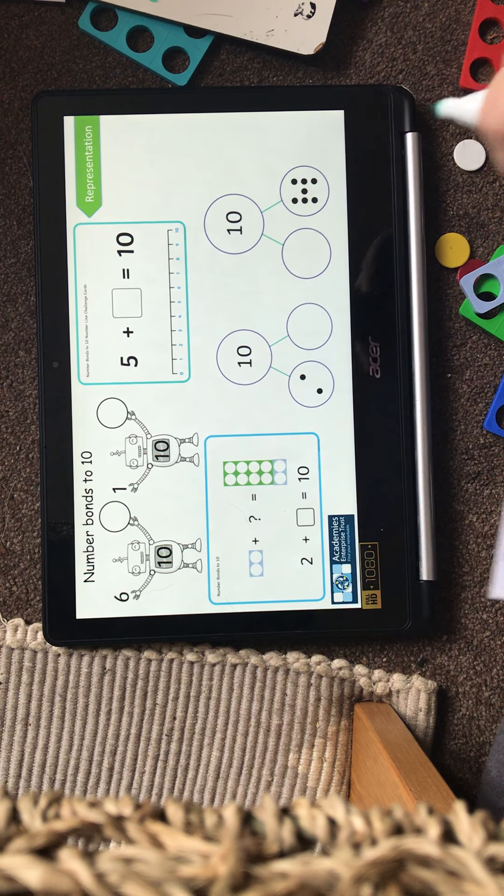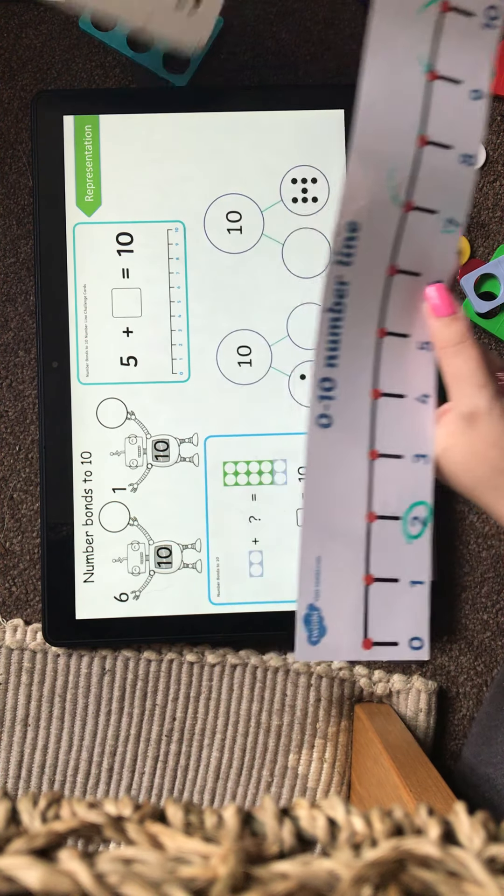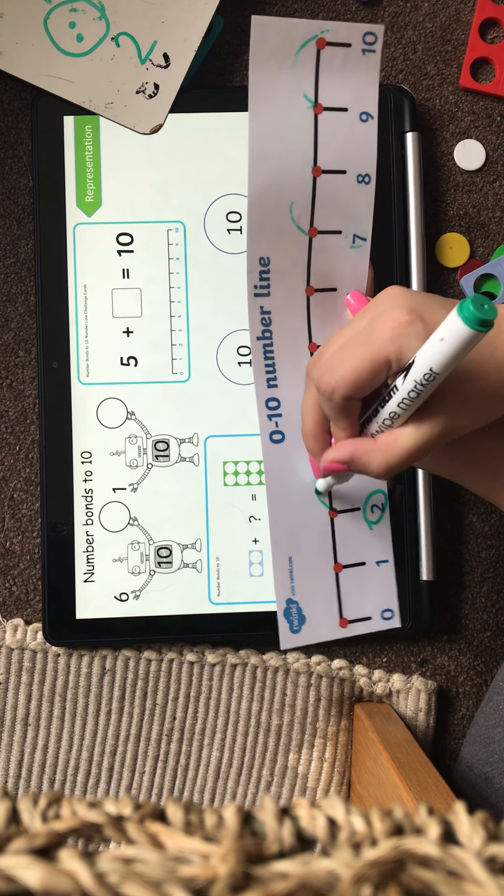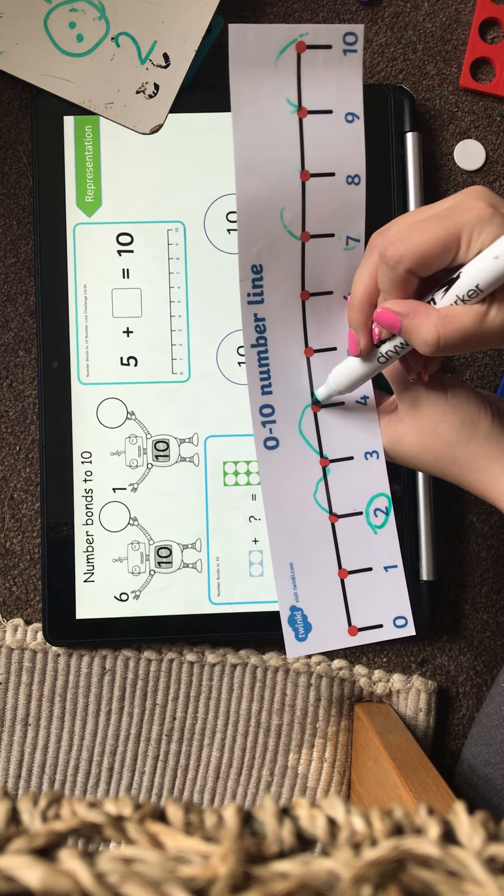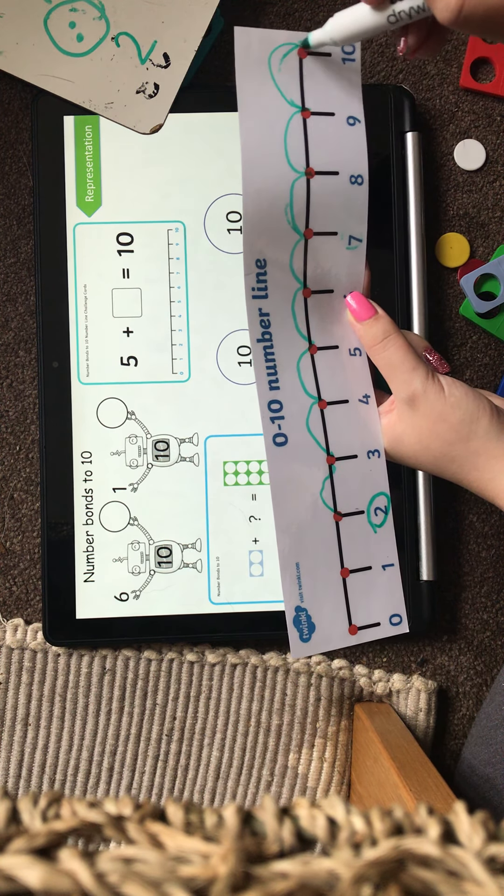So I'm going to find my 2. Oh, there it is. I'm going to circle it. Now I need to count how many bunny hops I need to reach 10, because my answer needs to be 10. So let's try. 1, 2, 3, 4, 5, 6, 7, 8.